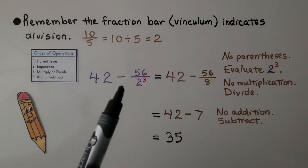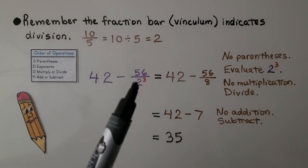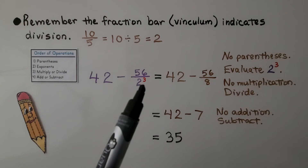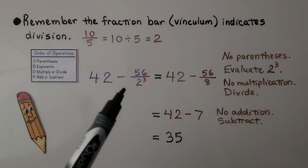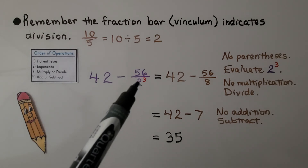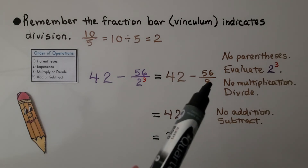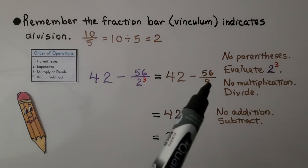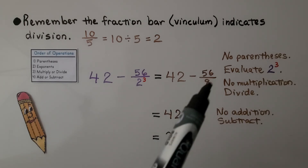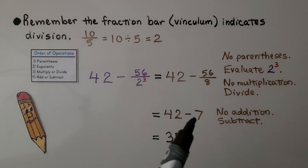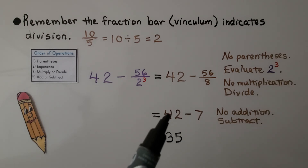If we see 42 minus 56 over 2 raised to the third power, there are no parentheses, so we evaluate 2 raised to the third power: 2 times 2 times 2 equals 8, giving us 56 eighths. There's no multiplication, and the fraction bar indicates division, so we do 56 divided by 8, which is 7. There's no addition, so we skip to subtraction: 42 minus 7 equals 35.